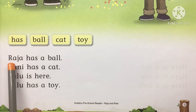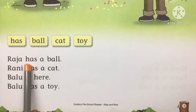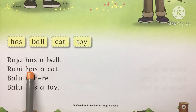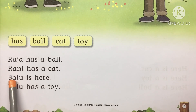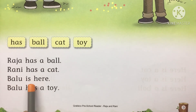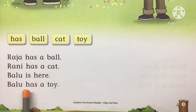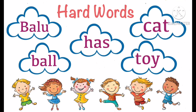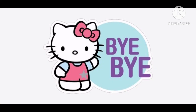Now again: Raja has a ball. Rani has a cat. Baloo is here. Baloo has a toy. Here are some hard words — you have to learn these words. Bye-bye children, have a great day.